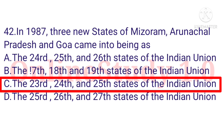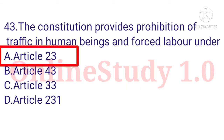Question number 42: In 1987, three new states of Mizoram, Arunachal Pradesh, and Goa came into being. Question number 43: The Constitution provides the prohibition of traffic in human beings or forced labour under option A: Article 23.